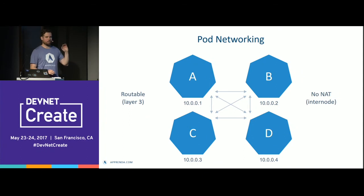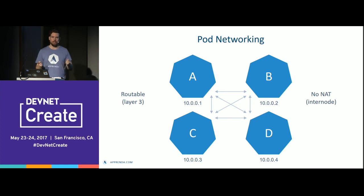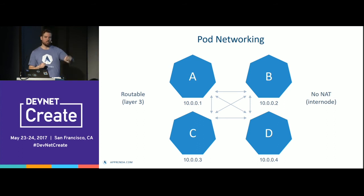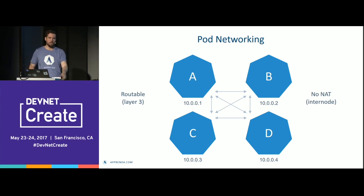Pod networking is extremely flat — there's no NAT. For those familiar with Docker and port wrangling, there's none of that in Kubernetes. Each pod can talk to all other pods, and it's routable layer three. They all each get their own internal IP address that they can talk to each other with.